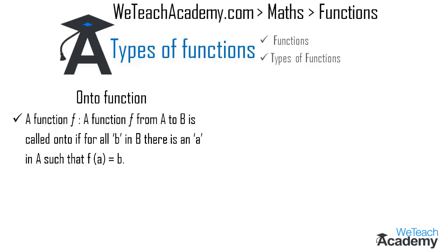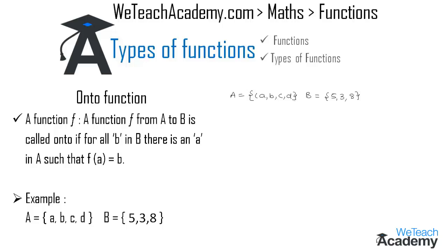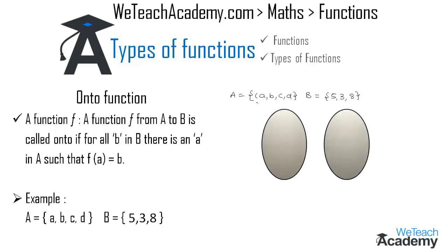Let me explain this concept with the help of an example. We have the elements of set A as a, b, c, and d, and the elements of set B as 5, 3, and 8. Let us draw two Venn diagrams — the first representing set A and the second representing set B — and write the elements of each set in their respective Venn diagrams.